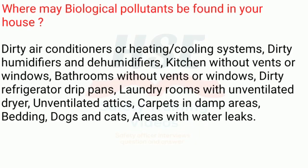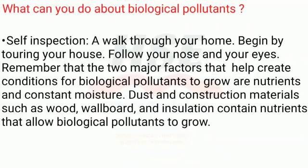Where may biological pollutants be found in your house? Common locations include dirty air conditioners or heating/cooling systems, dirty humidifiers and dehumidifiers, kitchens without vents or windows, bathrooms without vents or windows, dirty refrigerator drip pans, laundry rooms with unventilated dryers, unventilated attics, carpets in damp areas, bedding, dogs and cats, and areas with water leaks.